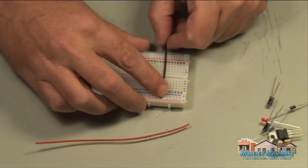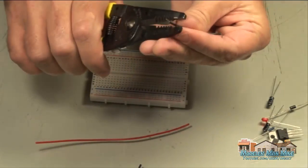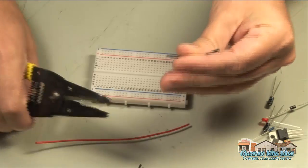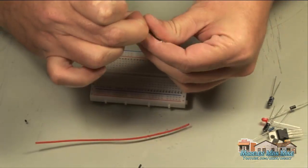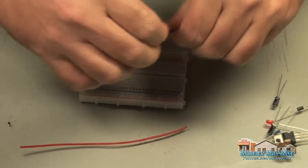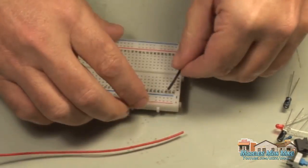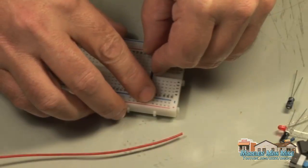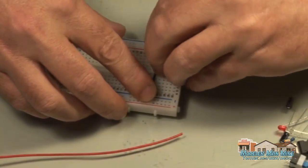First thing I do whenever I build these things is I'll lay it out, kind of get my lines down that I'm gonna use. It helps me reference stuff, so I just trim these up, bend them in, put them in the breadboard so that I can get a good reference where stuff's gonna sit.